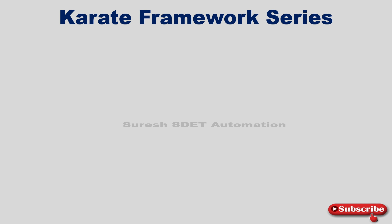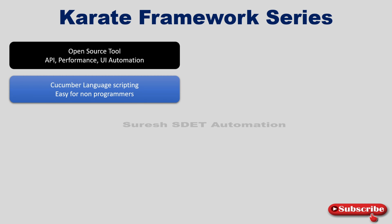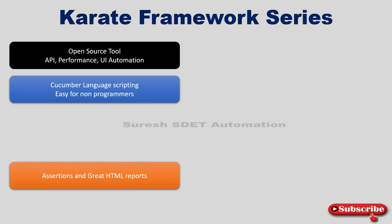Karate is an open source tool which supports API, performance, and UI testing, and you can also do desktop testing as well. This framework supports the Cucumber language scripting, and it is easier for non-programmers — everyone who can write in Gherkin language can start using it. Gherkin language is essentially English context.